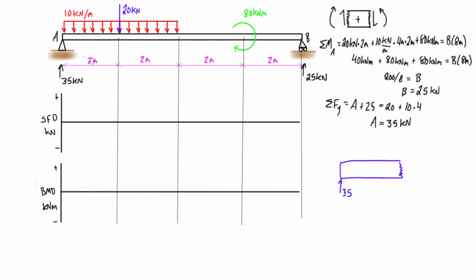We start at the left-hand side, throw on the reaction, and take our cut infinitesimally close — the distributed load is zero, so the internal shear force is positive 35 kilonewtons. Moving along, taking a virtual cut just to the left of the point load, we get two meters of distributed load — that's 20 kilonewtons pressing down. So 35 up minus 20 down gives positive 15. Just to the right of the point load we add the 20 kilonewton point load, giving 40 down and 35 up — so negative 5.